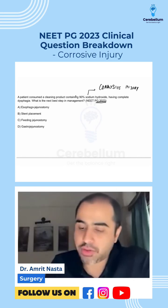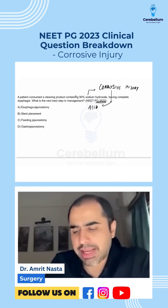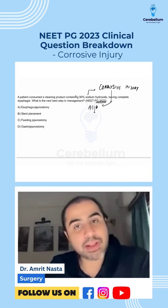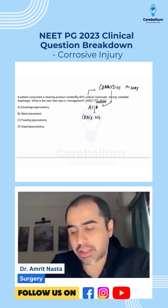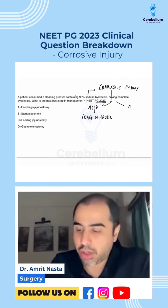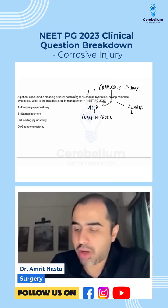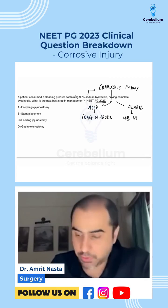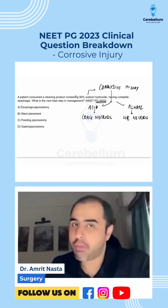Corrosive injury can happen in two ways: consumption of acid or alkali. Acid injury is less severe because it causes coagulative necrosis, which is better tolerated and less damaging. Alkali injury, on the other hand, leads to liquefactive necrosis, which is much worse.